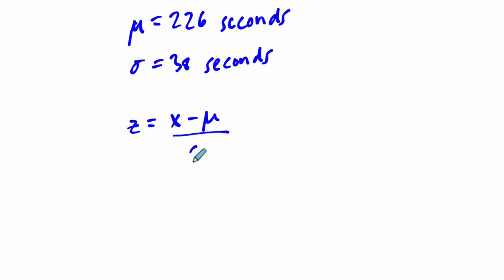That's another way of looking at it. In this case, we know that the mean is 226 seconds and the standard deviation is 38 seconds. The z-score is the data point you're looking at, x, minus the mean - that's the distance between your data point and the mean - divided by the standard deviation. It tells you how many standard deviations that distance is made up of.